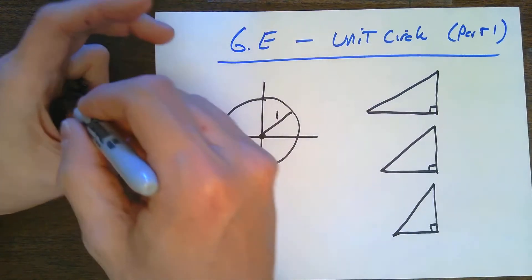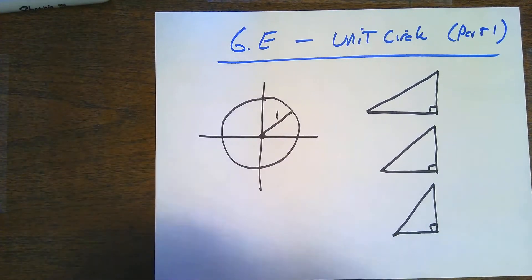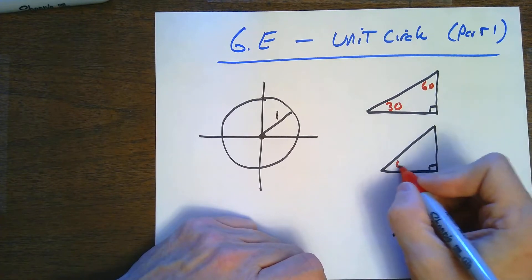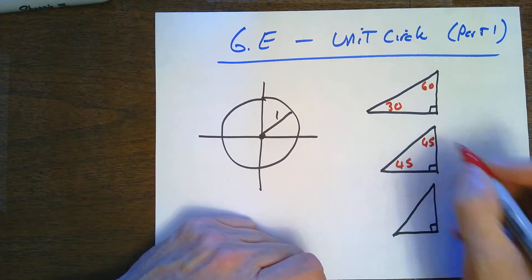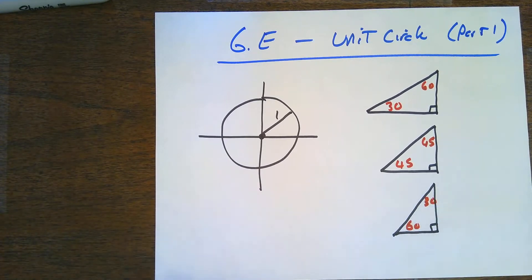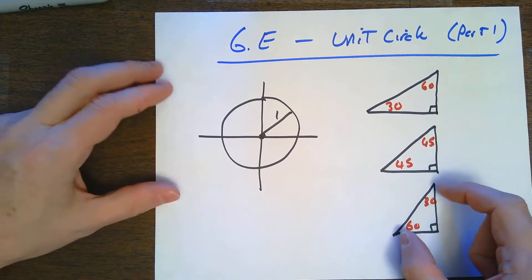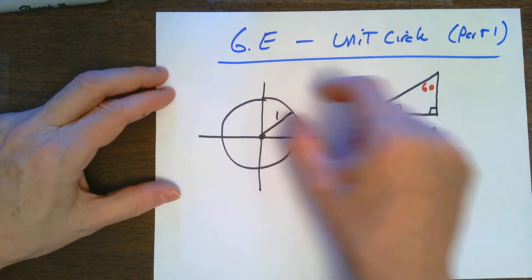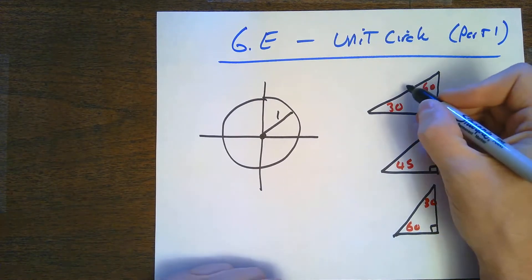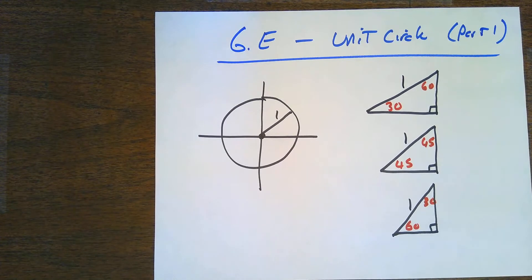The three special right triangles are the 30-60-90, the 45-45-90, and the 30-60-90 again but with the 60-degree angle oriented differently. Think about putting each of these triangles into the first quadrant. The important thing is that the hypotenuse will be the unit one, so we have to think back to geometry for the other sides.